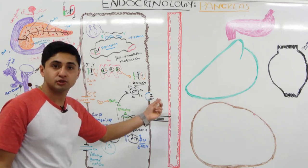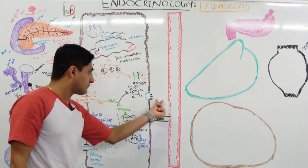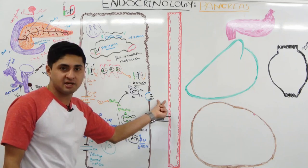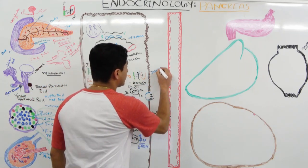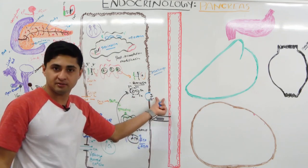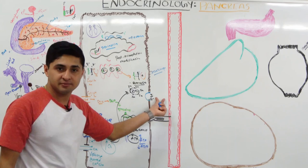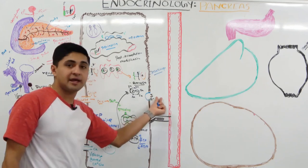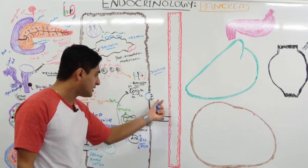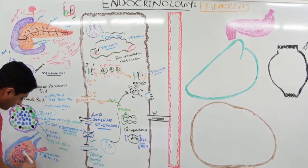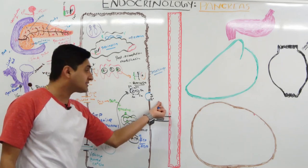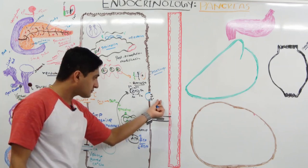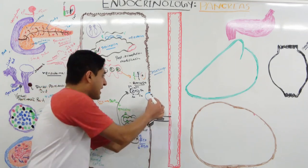Insulin has a very short half-life — it gets destroyed rapidly. Enzymes like insulinase, found especially in the liver, brain, and kidney, destroy insulin. The half-life for insulin is about six minutes. Because it is destroyed so rapidly, we don't typically use insulin as a clinical marker for beta cell function. We use C peptide instead, because C peptide has a longer half-life and the liver does not clear it as fast as insulin.